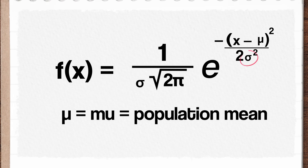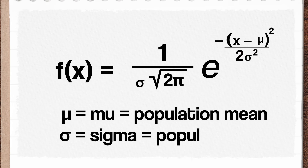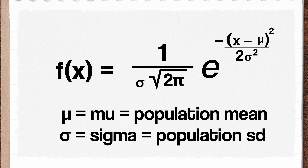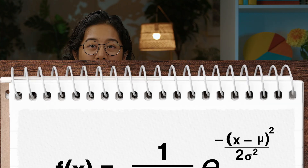And the bit on the bottom, which looks like a letter O with a baseball cap, is the Greek letter sigma. Sigma represents the standard deviation of the normal distribution. We're going to gloss over some of the details of where these specific numbers come from and how the equation was created, and just focus on helping you use it.